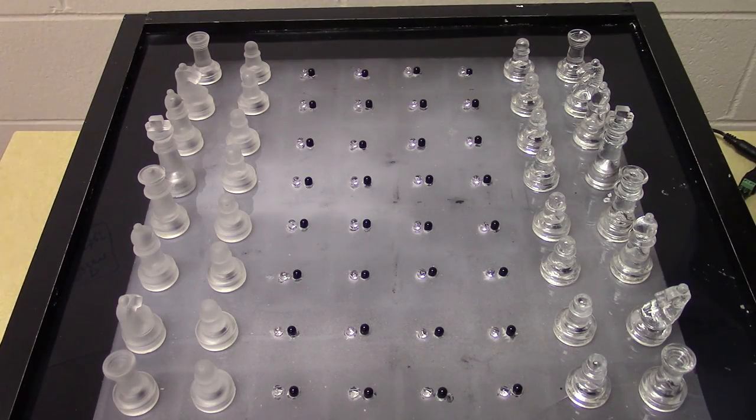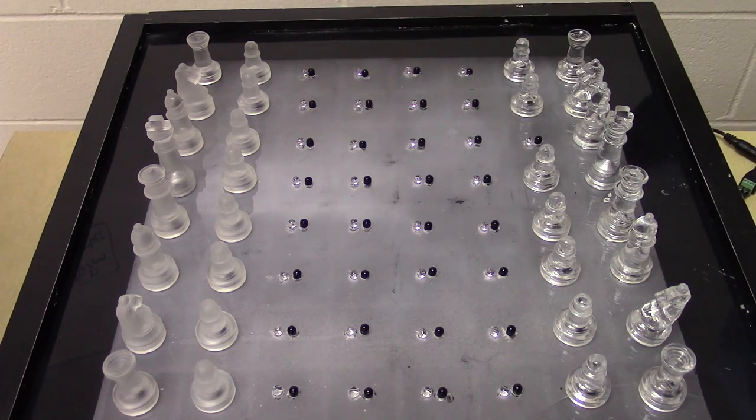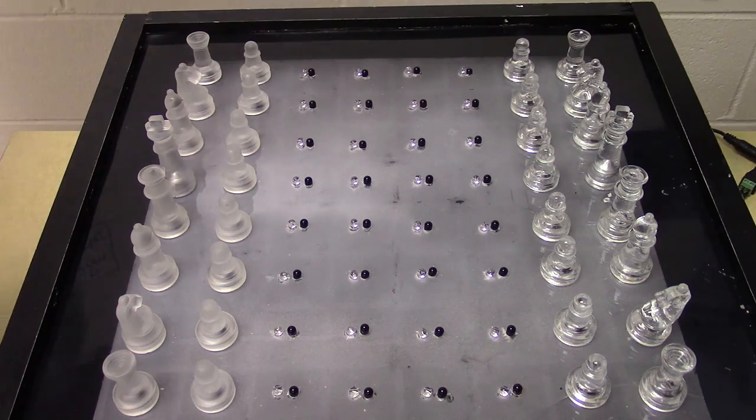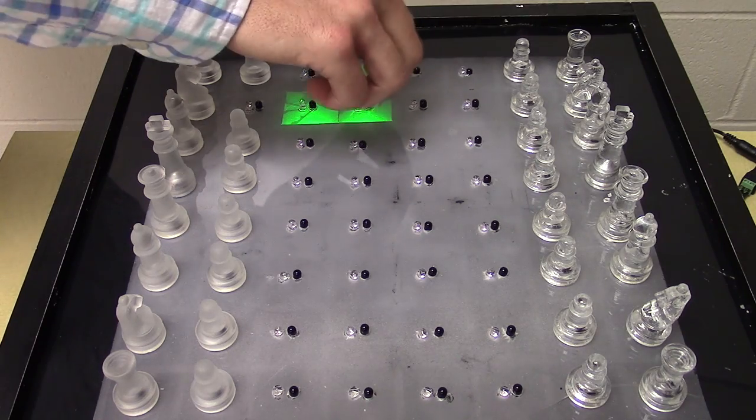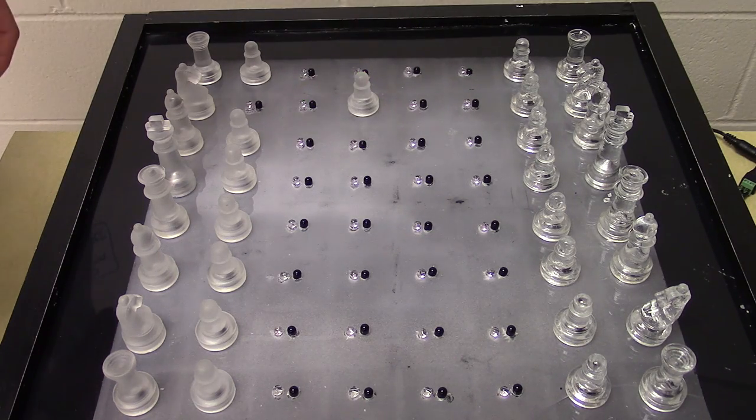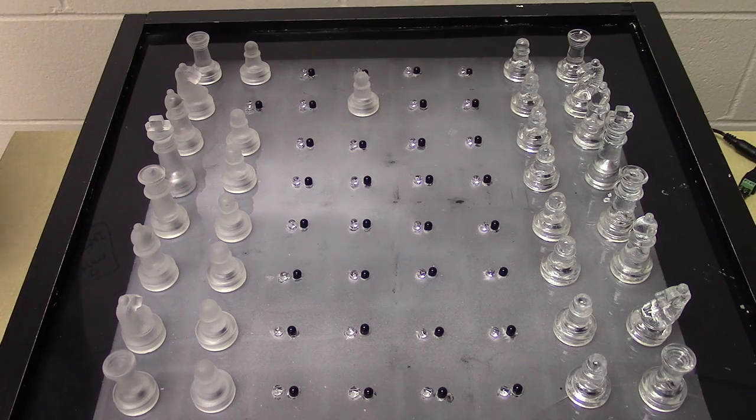Now we're going to demonstrate how the chess board works. The left side of the board is supposed to go first. So if I lift a piece on my side of the board, the game doesn't start. Okay, so I'm going to lift this piece right here. It's going to highlight the two moves that I can make. When I put the piece down, it's going to register that that piece got set down on that square and store that position into the game engine.